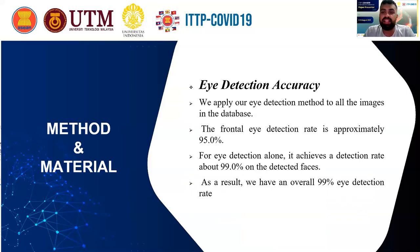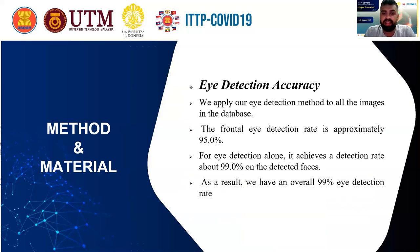The frontal eye detection rate is approximately 95%. For eye detection alone, it achieves a detection rate of about 99% on detected faces. As a result, we have an overall 99% eye detection rate.